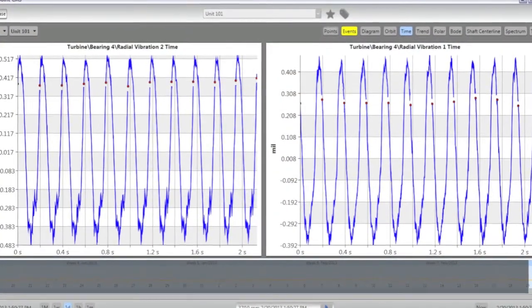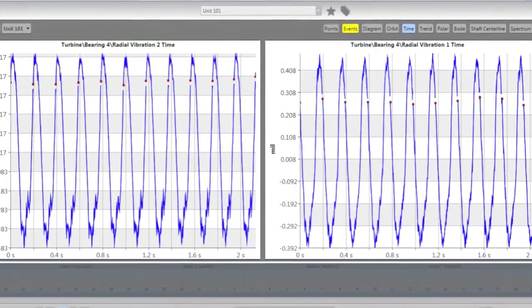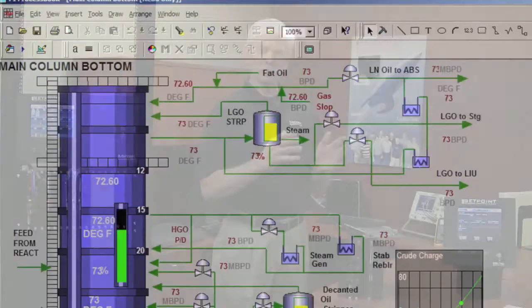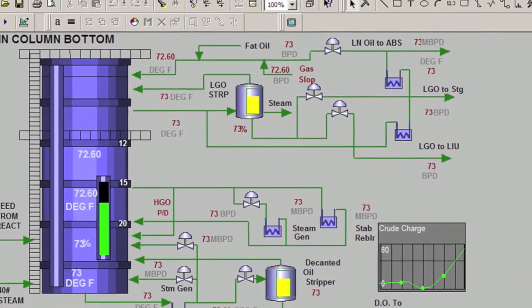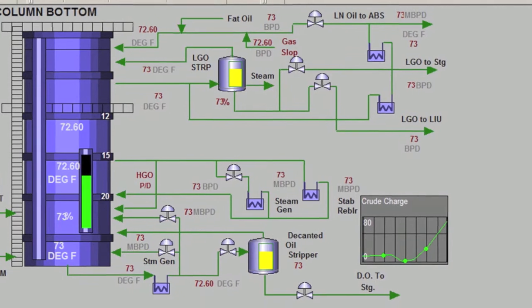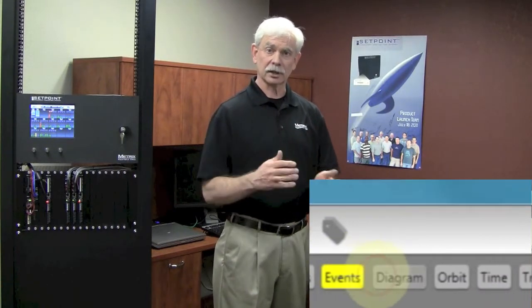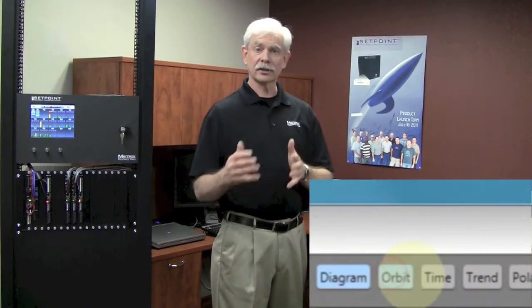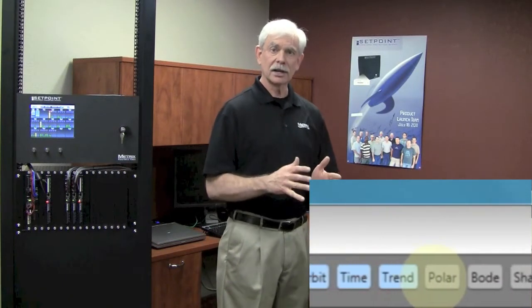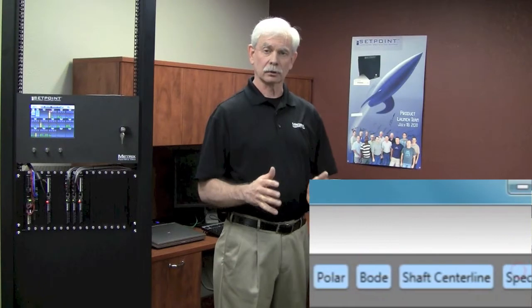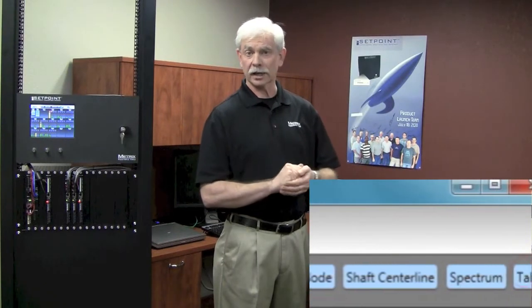So you can see the time base, the orbit, the spectrum, and those kinds of displays. The initial release will use ProcessBook to navigate down to the specific point you'd like to look at. Then you can click on the point and say: would I like to look at a trend, a time base, an orbit, or any other kind of waveform data associated with that point? At that point, you will be moving into the Setpoint CMS software, which will launch and display that particular data.